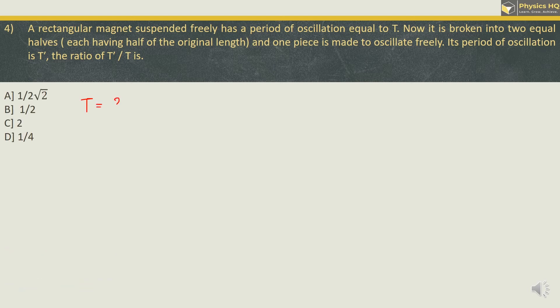This is equal to 2 pi root of I moment of inertia divided by M into B. M is magnetic moment and B is the field. Now since the magnet is broken down into two halves, moment of inertia and magnetic moment will change. Moment of inertia was ML² / 12 where capital L is length of the magnet. The new moment of inertia will be half of the mass.